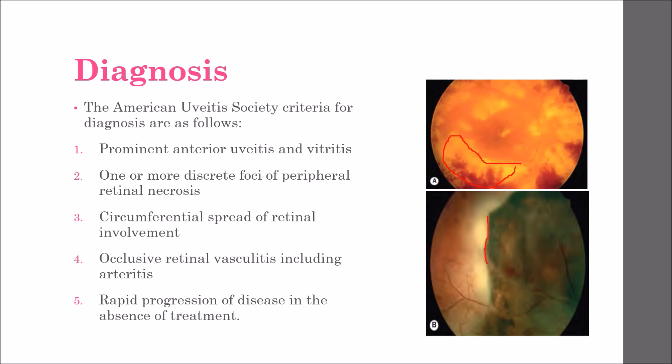Secondary rhegmatogenous retinal detachment is a major cause of visual morbidity. The third criterion is circumferential spread of retinal involvement. Posterior pole involvement is late, and optic neuritis is sometimes a feature. Occlusive retinal vasculitis including arteries may occur, pre-retinal neovascularization can develop and may lead to vitreous hemorrhage, and there is rapid progression of disease in the absence of treatment.